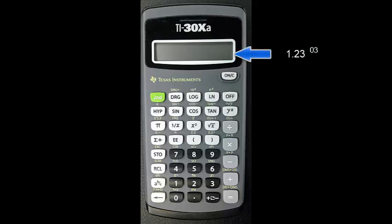If you entered 1.23 times 10 to the third, like we just did, and pressed the equals button, the calculator will convert this to floating point notation.